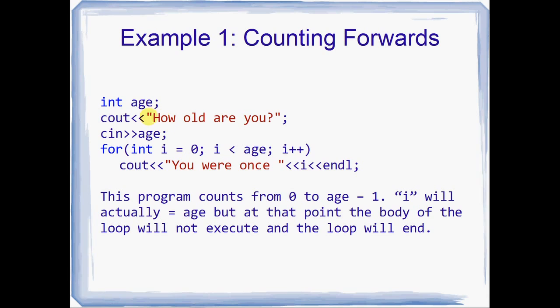A little example here, counting forwards with a for loop. Int age, and we see out to the screen how old are you, then we read from the keyboard the age that they type. And now here's our for loop, for int i equals zero, while i is less than age, i plus plus. The body of the for loop is only a single statement, just a single c out, so we don't need to include the open and close braces. If you've got a single line in your loop, you don't need to include those braces. Do be careful though, if your single line is an if statement, or if it's another loop, it's going to get really confusing. This program counts from zero all the way up to age minus one. i will actually equal age, but at that point the body of the loop won't execute, and the program will drop through to the code below the loop.